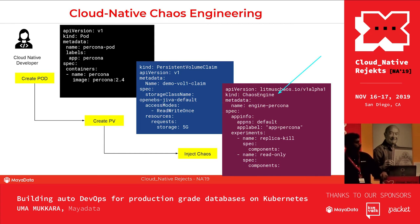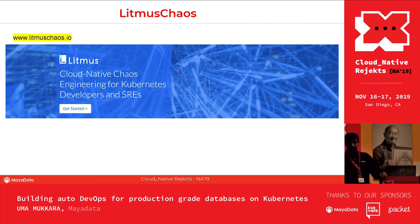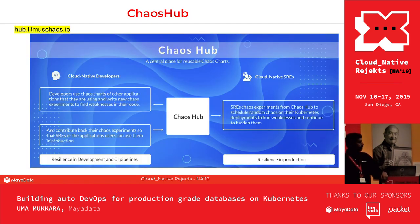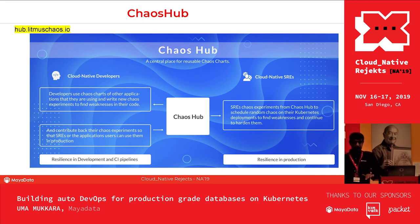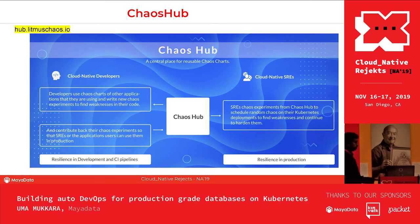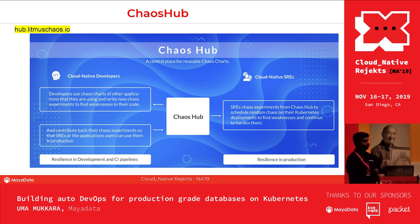That brings us to Litmus Chaos and the chaos hub — similar to Helm charts, but for chaos. The hub is the idea of bringing developers and SREs together. Application developers put their failure test cases into the Litmus infrastructure and push them to the hub; SREs can then pull them in and use them in production. As you increase resilience in CI pipelines, you develop negative test cases and move them to chaos hub so users can continue doing negative testing in production as well.